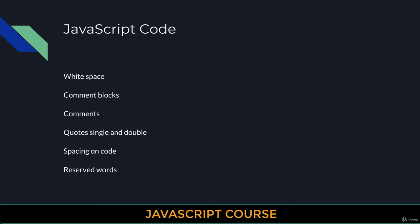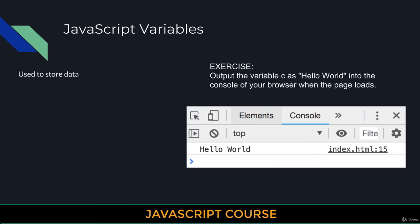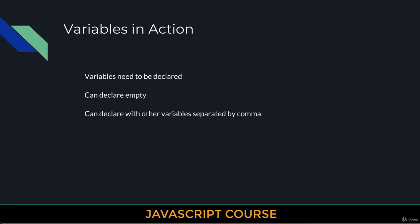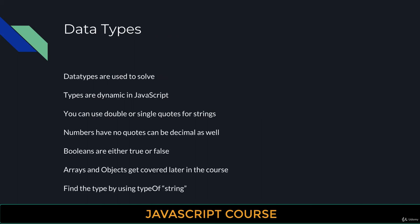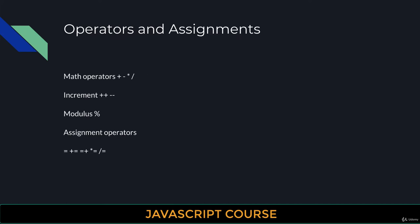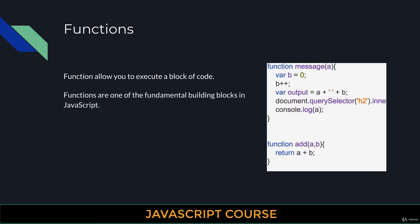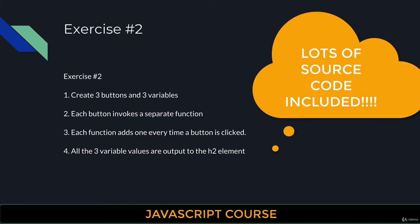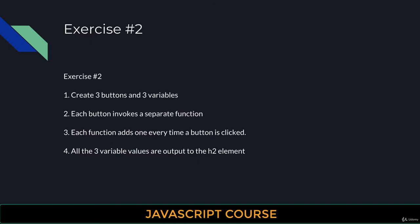We'll cover some core fundamental concepts of JavaScript — how it handles whitespace, commenting, single quotes, double quotes — then the fundamentals like variables used to store data, how to set up variables, the rules around variables, how variables can be declared, different data types including numbers, text, and booleans. Later in the course we look at arrays and objects, operators and assignments, and how to set up functions, which is one of the core building blocks of JavaScript. We've also included exercises so you can try JavaScript out and build cool mini applications.